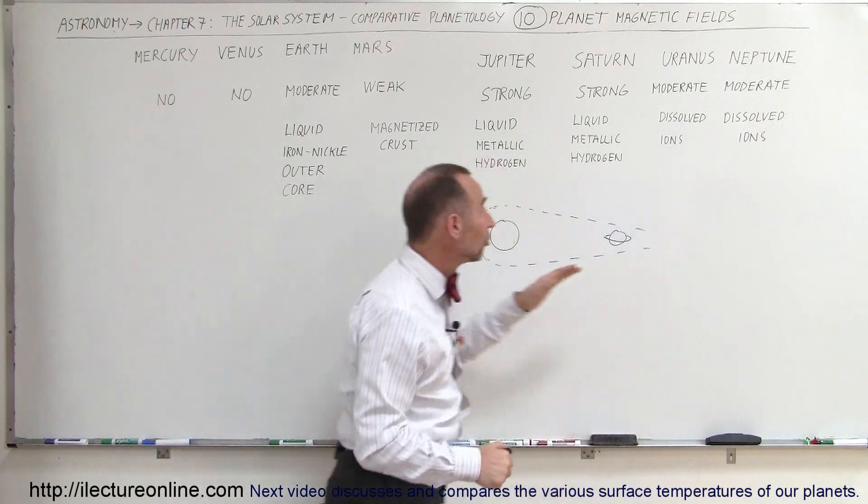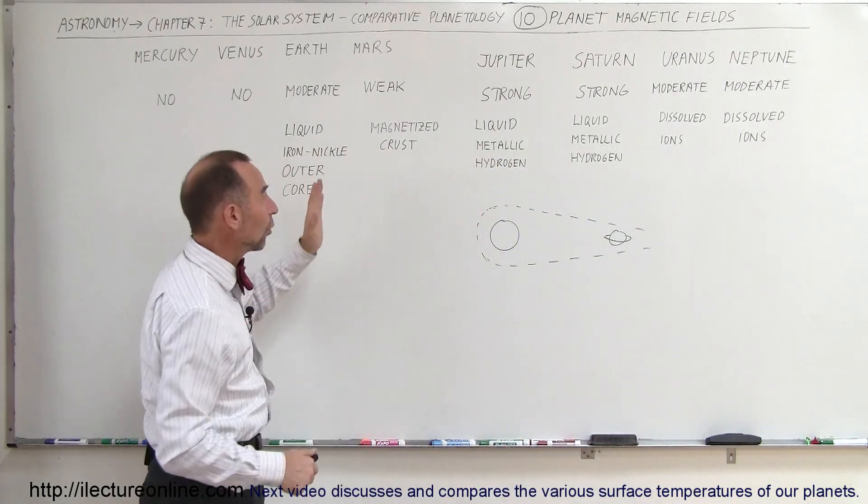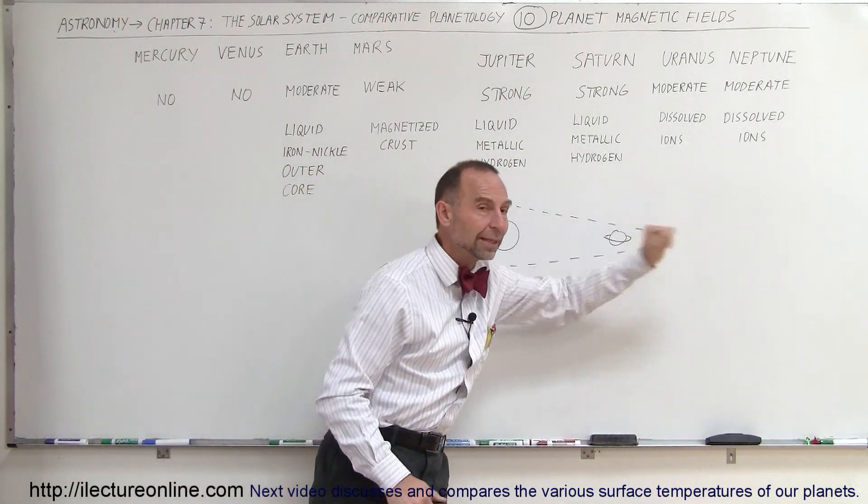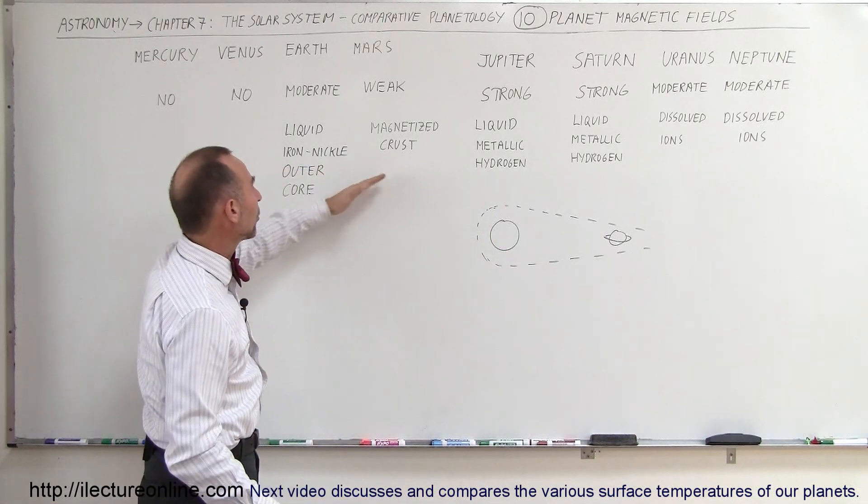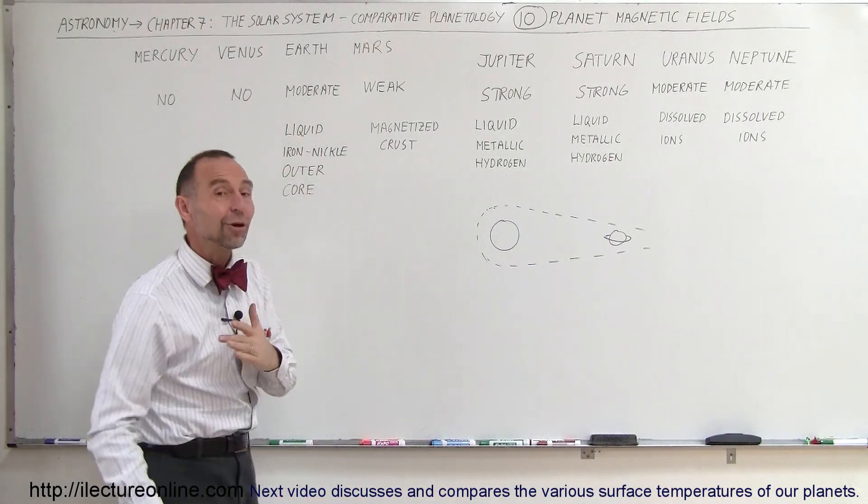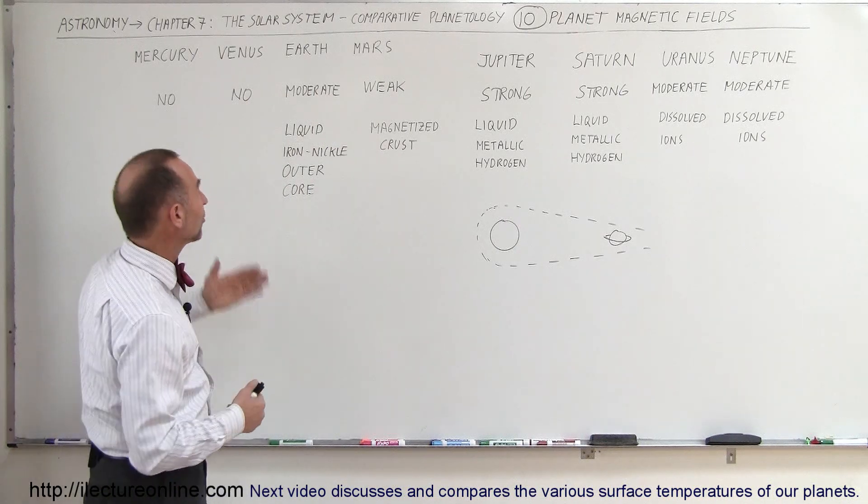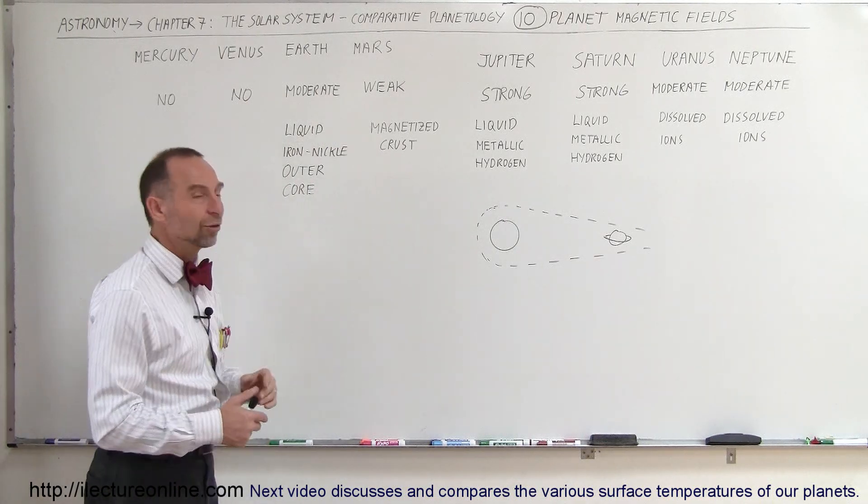Again, the magnetic fields of those two planets are stronger than the magnetic fields of the Earth. So this is where you find all the strong magnetic fields. There's where you find the relatively weak magnetic fields. Earth, luckily for us, has the strongest magnetic field of all the four terrestrial planets.